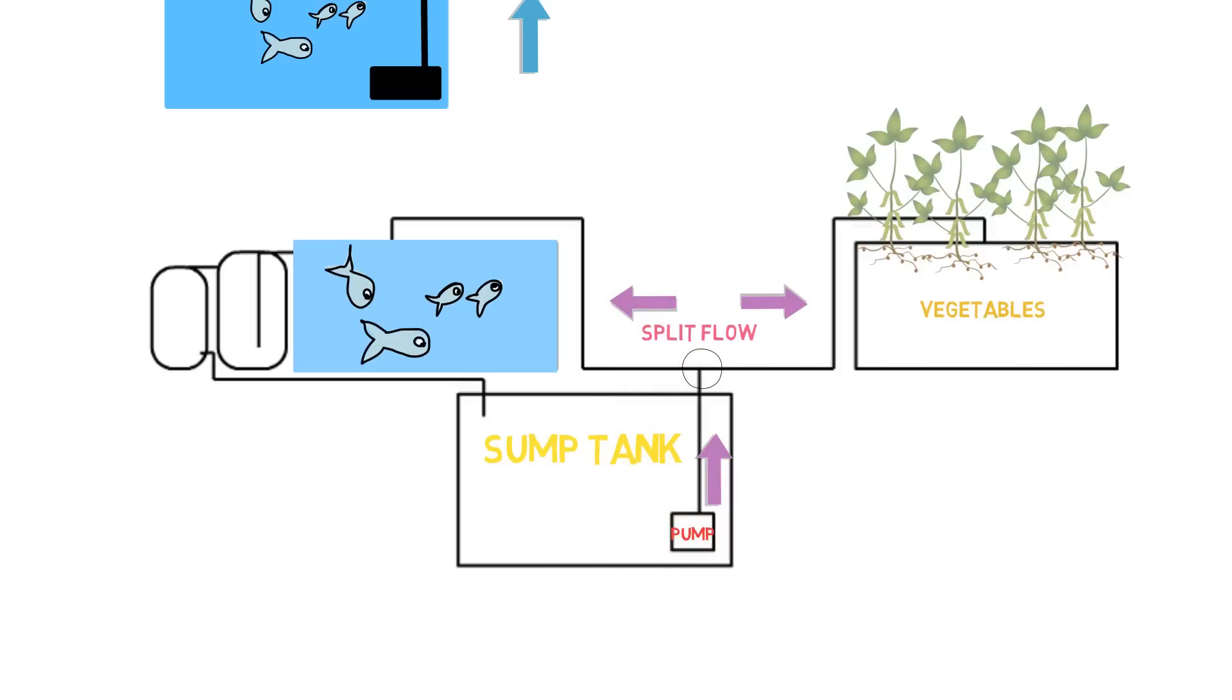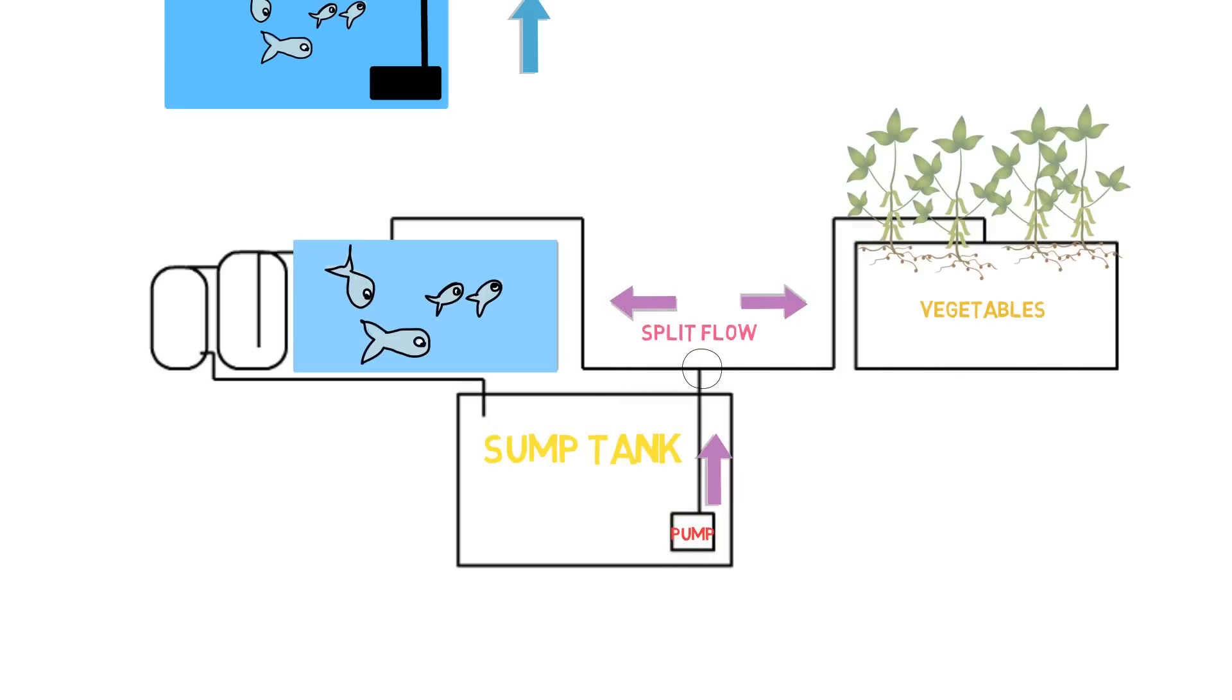And then we're going to have one part of the system going to the fish tank area. So they split up, and what we can do is put ball valves on each end of the split. We are able to have maximum control over the distribution of water, when we want to cut it on, cut it off, and how much flow we want to go to it.